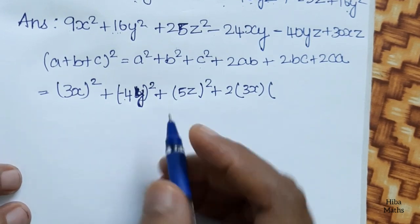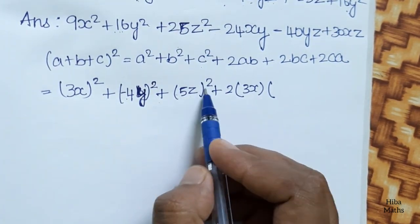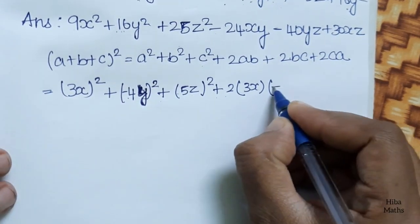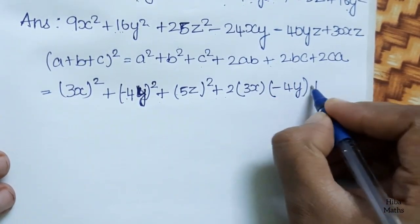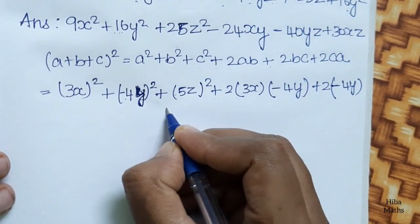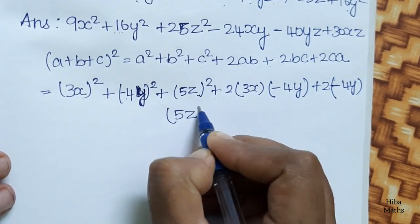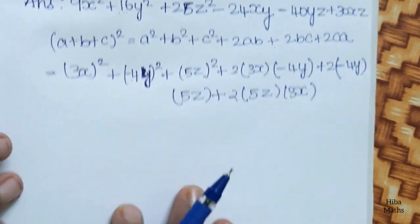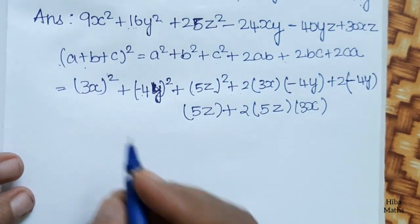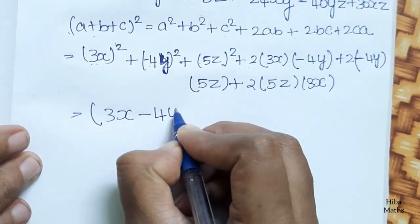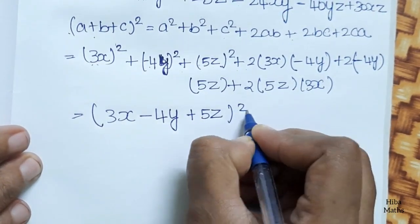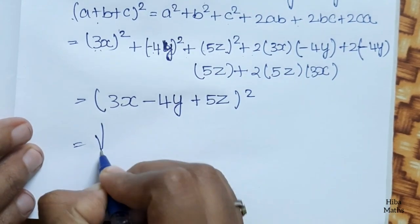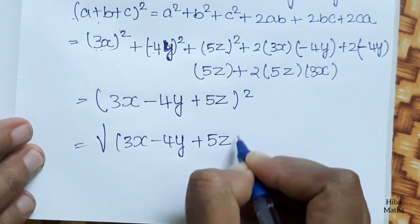Comparing: 9x² is (3x)², 16y² is (4y)², 25z² is (5z)². The a value is 3x, b value is minus 4y, c value is 5z. So the expression equals (3x minus 4y plus 5z) whole square.